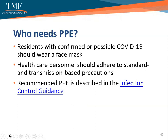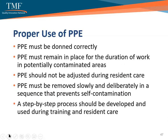PPE must be donned correctly before entering the resident area and must remain in place and be worn correctly for the duration of work in potentially contaminated areas. PPE should not be adjusted — such as retying gowns or adjusting the respirator or face mask — during resident care, and must be removed slowly and deliberately in a sequence that prevents self-contamination. Have a PPE buddy system in case assistance is needed. A step-by-step process should be developed and used during training and during resident care.